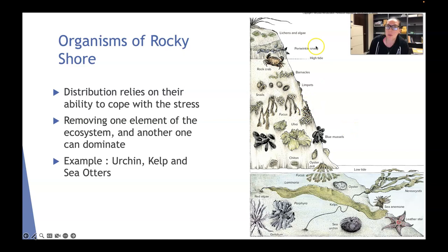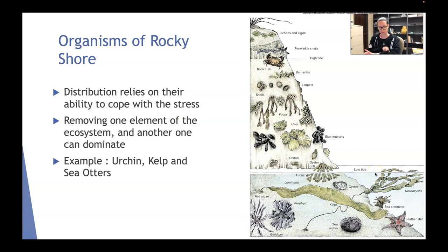Some of the examples on this sketched diagram include lichens and algae, periwinkle snails kind of where the high tide comes up to, rock crabs, barnacles, limpets, snails, different types of seaweed, blue mussels, and oyster drills. Underneath all of that we have sea urchins, leather stars, sea anemones, different types of seaweed, and oysters.